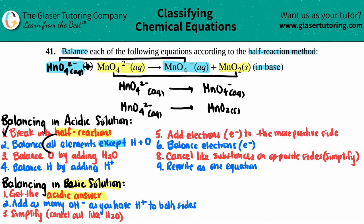Now we have to balance all elements except hydrogen and oxygen. I don't even see any hydrogen, so I'm not worried. The only other element is Mn — I have one manganese on the left and one on the right for each half reaction. They're balanced already, so I don't have to do anything. Step one is done.